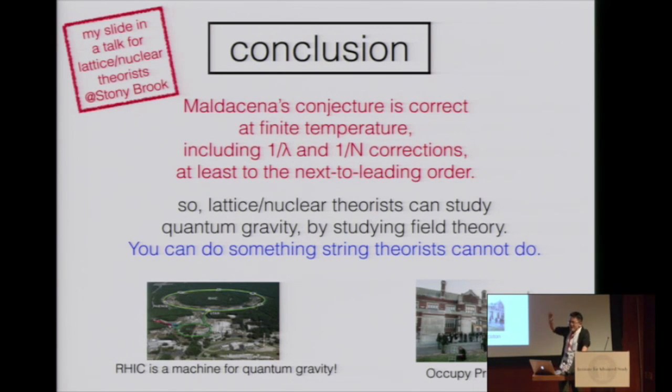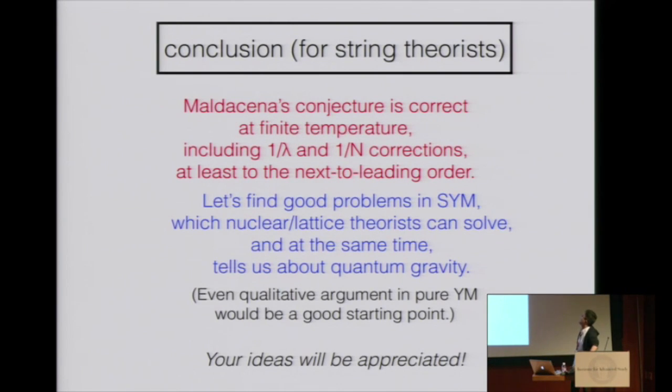I'm half lattice, half string theorist. I must be nice to string theorists too. This is my conclusion slide for string theorists. Maldacena conjecture is correct. It's useful. We should learn something about quantum gravity. Let's find good problems in super Yang-Mills, which nuclear or lattice theorists can solve by using their method. And at the same time, tells us about quantum gravity. Even a qualitative argument in pure Yang-Mills would be a good starting point for lattice theorists. Your ideas will be appreciated.